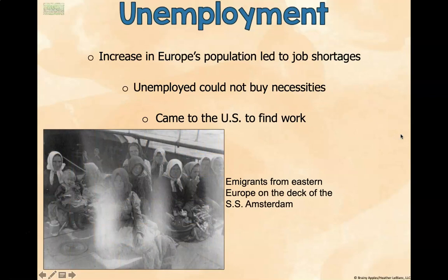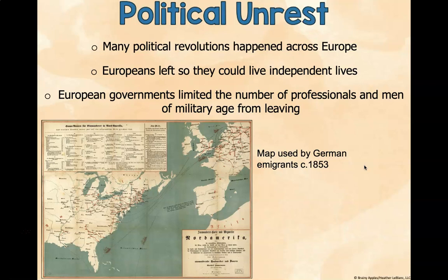Unemployment was also a reason immigrants came to the United States. An increase in Europe's population led to job shortages. The unemployed could not buy necessities for themselves or their families, and they came to the United States to find work. This is a picture of immigrants from Eastern Europe on the deck of the SS Amsterdam. Political unrest also caused people to leave — many political revolutions happened across Europe. Europeans left to live independent lives, though European governments limited the number of professionals and men of military age from leaving. This map was used by German immigrants in 1853.